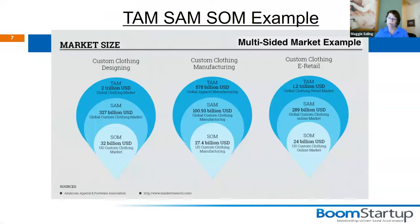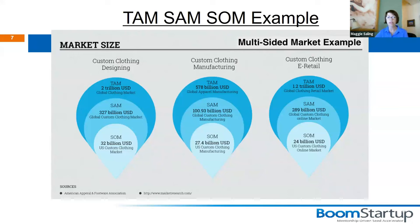Here is another version from Boom Startup, where they take three different areas to create a marketplace around and will take a percentage of the action. For custom clothing design, they estimated their SAM at $32 billion in the U.S. Custom clothing manufacturing is $27.4 billion, and custom clothing e-tailing is $24 billion. You would then massage that against your percentage of the transaction or a flat fee to predict what your income is going to be in three to five years, depending on what percentage of that you think you can make.